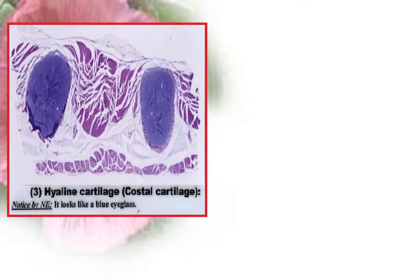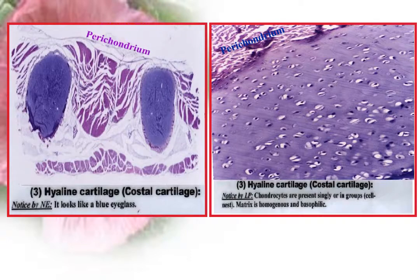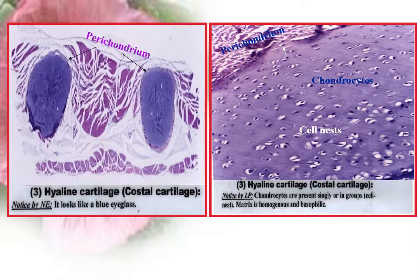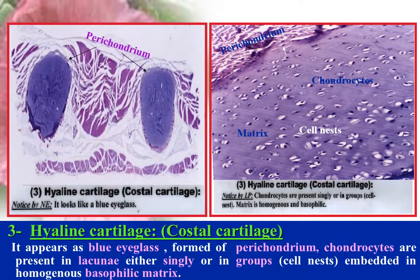Hyaline cartilage — an example being costal cartilage — appears as a blue glassy material. It is formed of a perichondrium, a fibrous connective tissue covering the cartilage from outside. Cartilage cells called chondrocytes are present in lacunae, either singly or in groups called cell nests, embedded in homogenous eosinophilic matrix containing fibers. The fibers cannot be seen as they are very thin to be seen by light microscope and have the same refractive indices as the matrix.